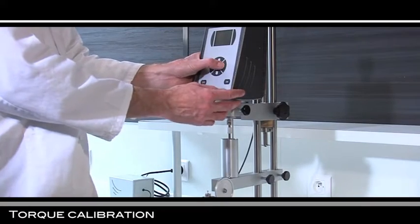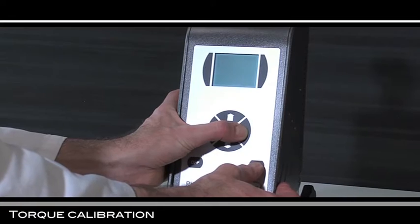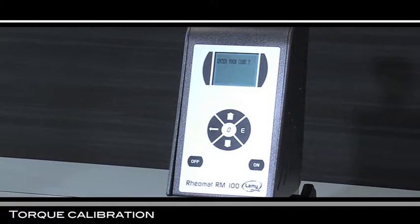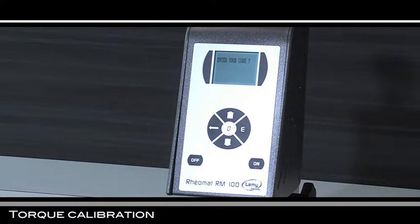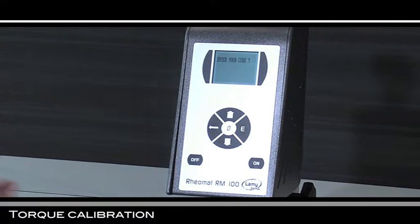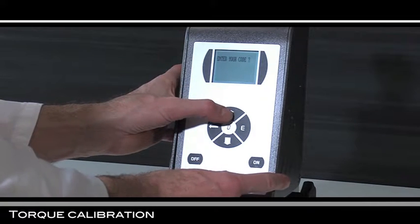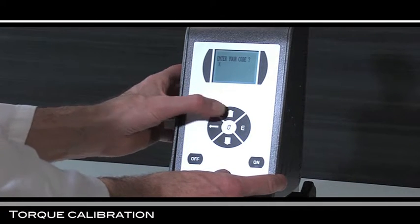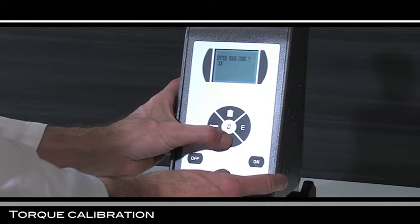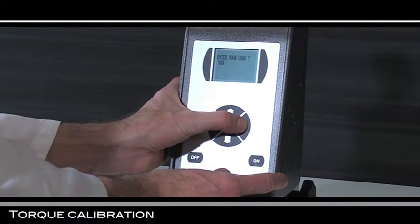Switch the viscometer off then switch it on again by pressing the keys E and on at the same time. Saisir votre code is displayed. For viscometers first RM and RM100 enter the following code: upper arrow, back arrow, lower arrow and E.